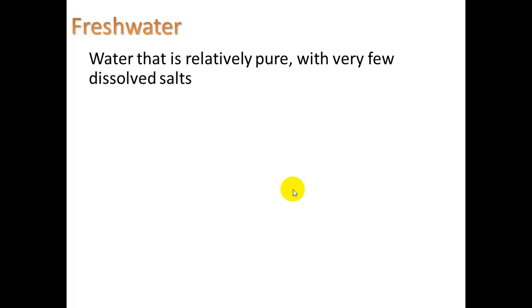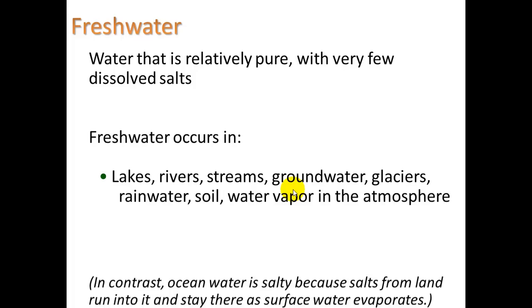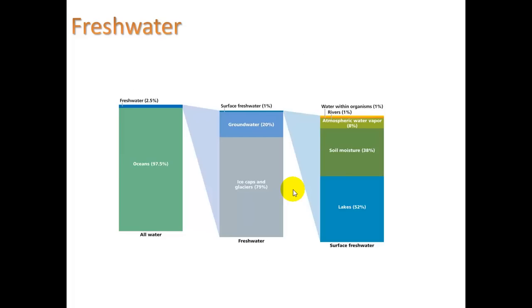Fresh water is water that is relatively pure with very few dissolved salts. Fresh water occurs in lakes, rivers, streams, groundwater, glaciers, rainwater, soil, water vapor, and the atmosphere. A glacier is basically a river of ice that flows extremely slowly — maybe a few feet a year. In contrast, ocean water is salty because salts from land run into it and stay there as surface water evaporates.